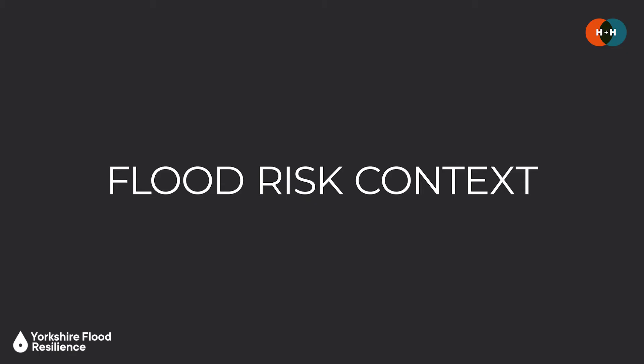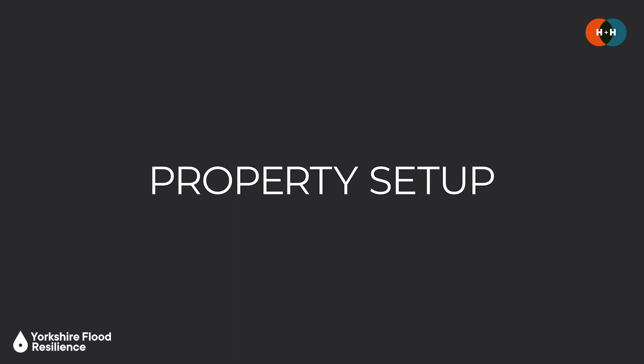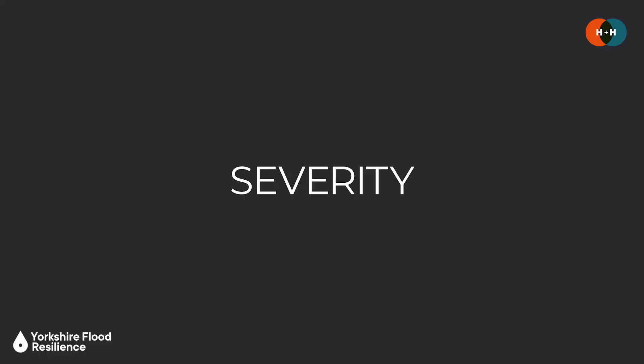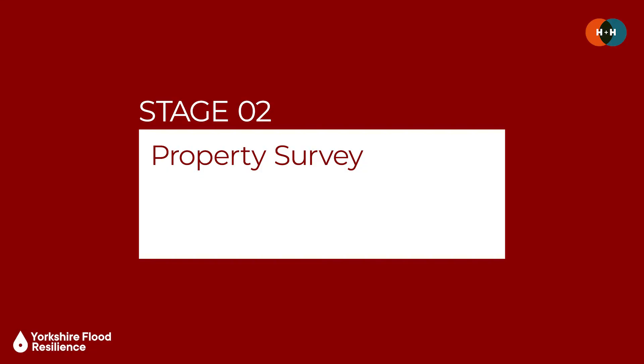Now let's look at how you would actually specify a recoverable approach. The suitability and selection depends on the particular flood risk context, the property setup, its function and user preferences, and the code of practice sets out the steps and stages to follow. Any design process should consider the sources of flooding and the pathways by which it reaches the property. Understanding the potential frequency and severity of flood events can really help inform which flood recoverable measures could be specified, and a key factor is what the building is actually made of and whether it will be suited for flood recoverable approaches.